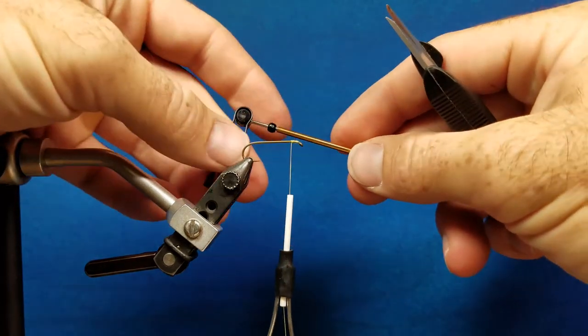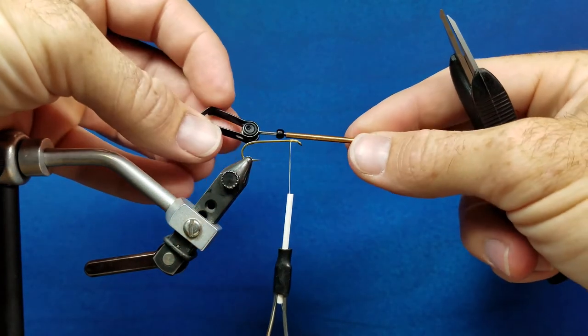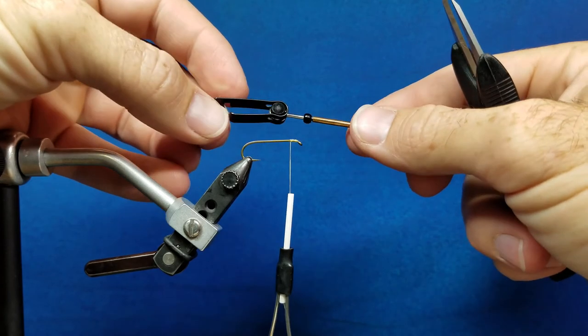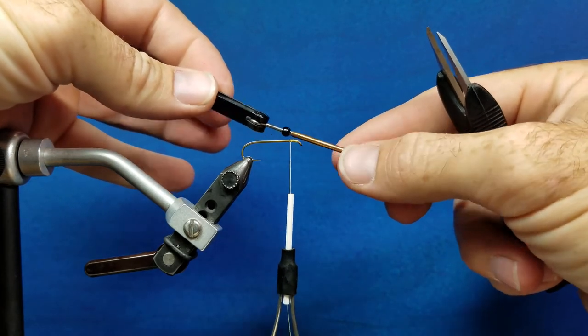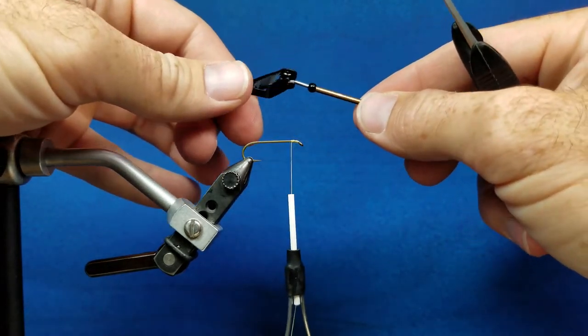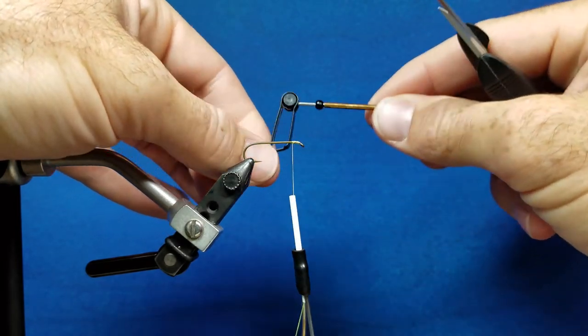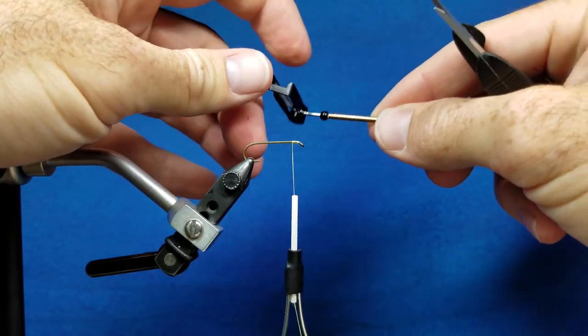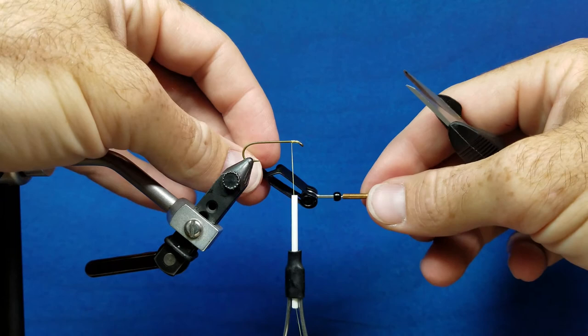One thing that's maybe not commonly considered is the style of hackle plier that you use. These are pretty cheap and affordable, but this type of hackle plier has a longer handle on it and it actually spins and rotates. So as I wrap it around the hook, which you'll see in some of my videos, it rotates with me, much easier than a stationary piece.